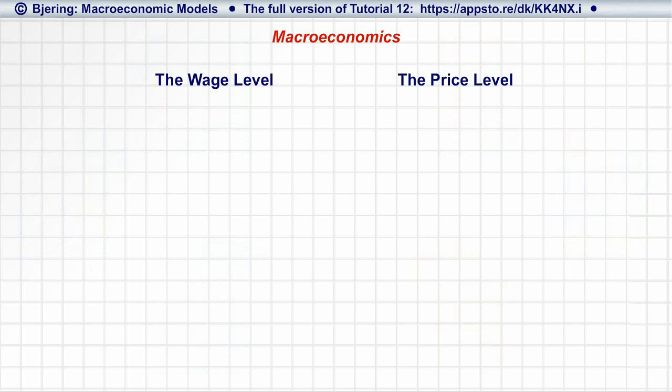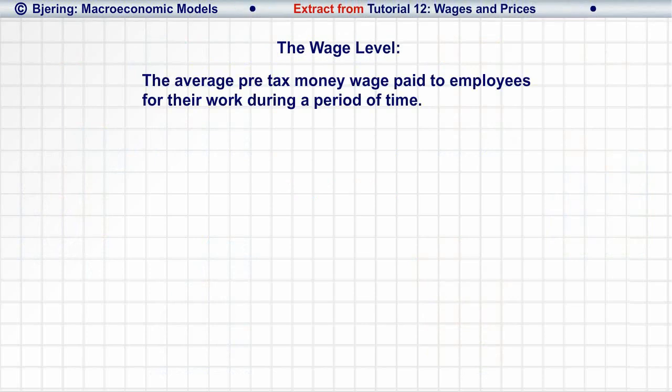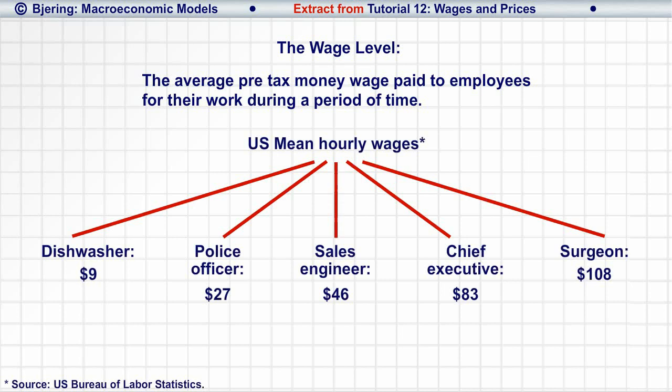What, more specifically, do we mean by the wage level and the price level? First, we focus on the wage level. The wage level indicates the average pre-tax money wage of employees. However, since there are many different wages covering a wide range from very high to very low salaries, it's not meaningful simply to compute the wage level as a simple average of money wages.